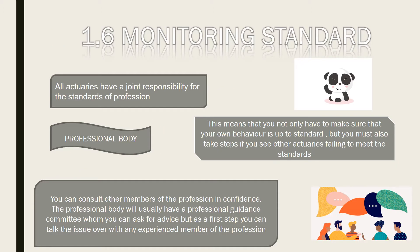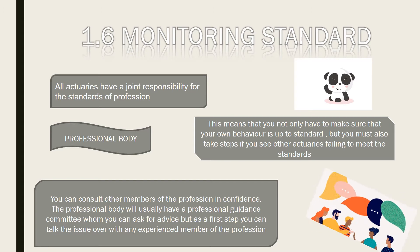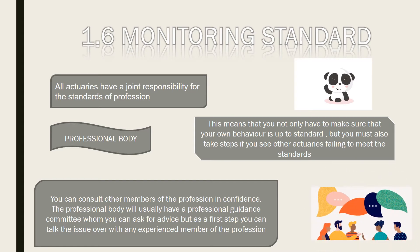1.6 Monitoring Standard: Professional Body. All actuaries have a joint responsibility for the standards of the profession. This means that you not only have to make sure that your own behavior is up to standard, but you must also take steps if you see other actuaries failing to meet the standards. You can consult other members of the profession in confidence. The professional body will usually have a professional guidance committee whom you can ask for advice. The first step is to talk the issue over with any experienced member of the profession.